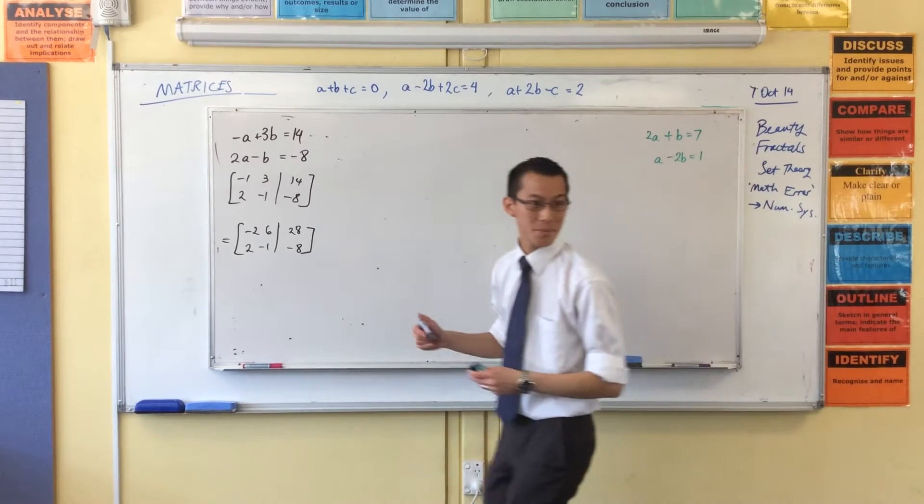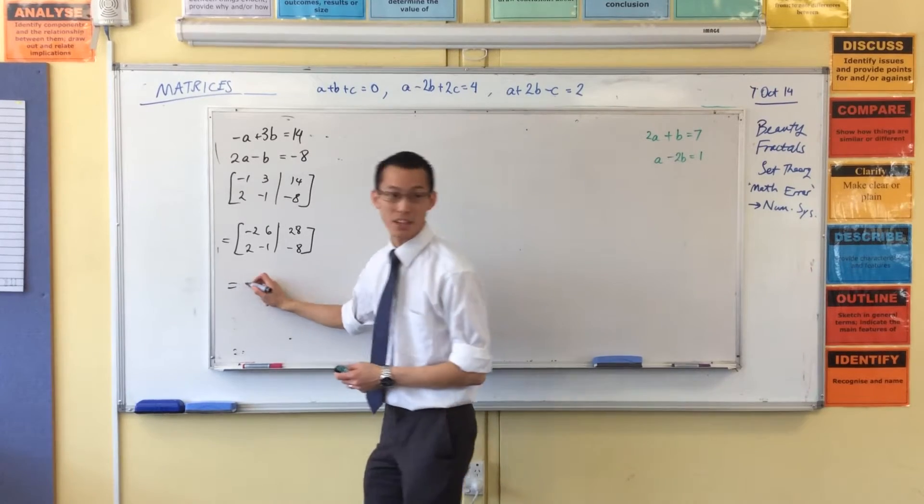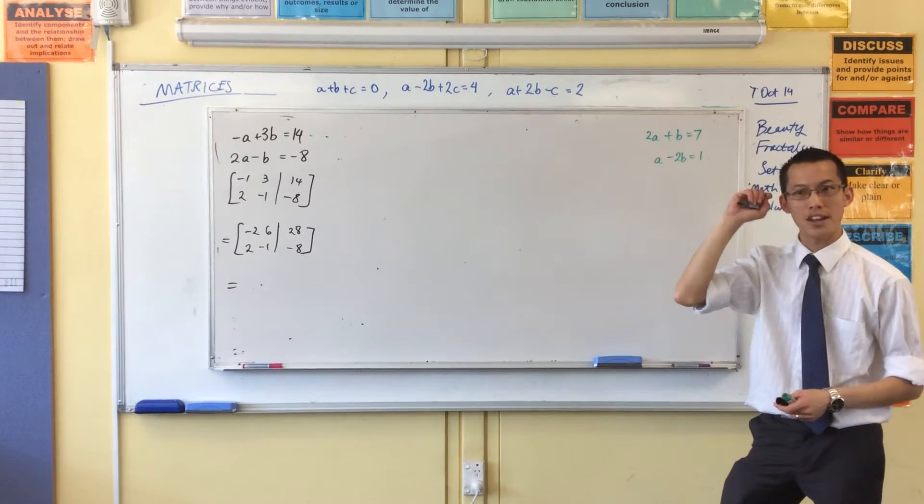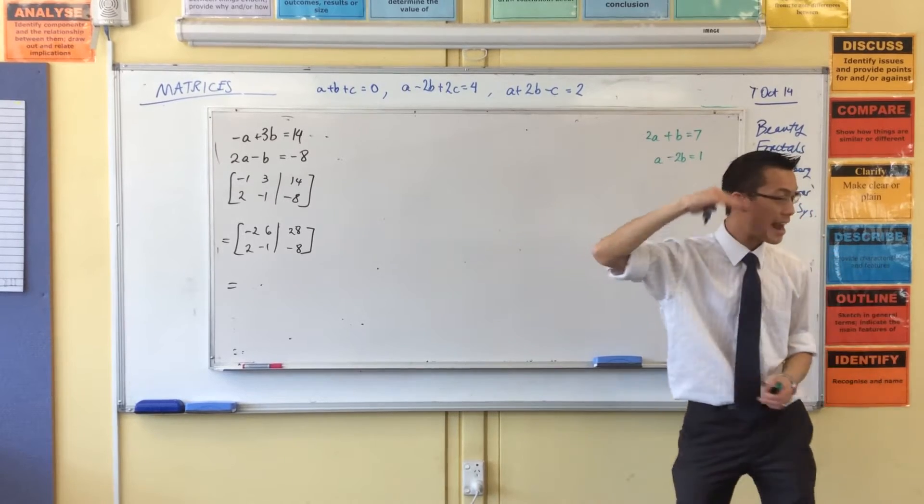What's your next step? Add the two rows together. Good. So I'm going to take the second row and add to the first.